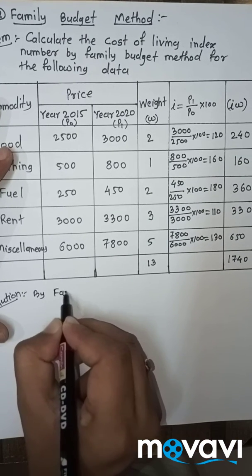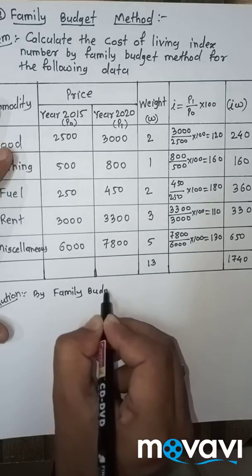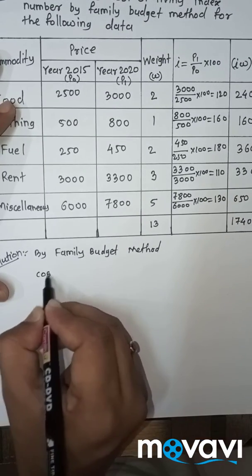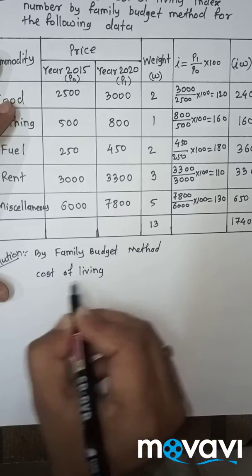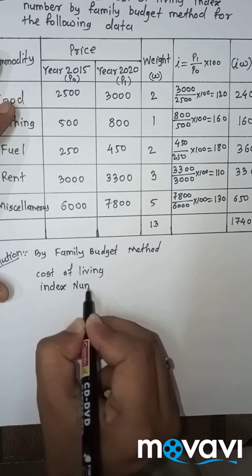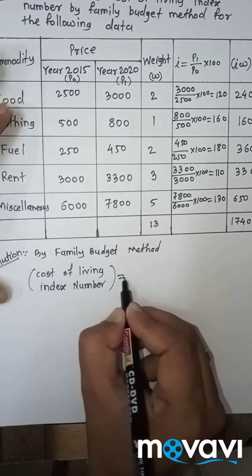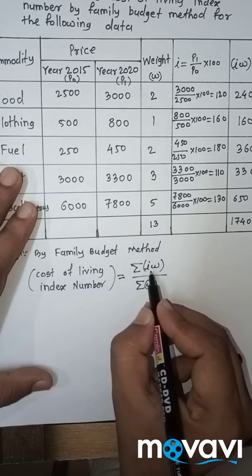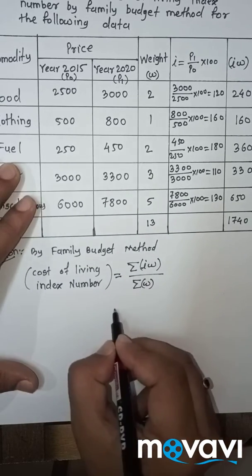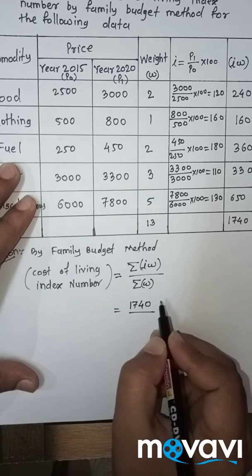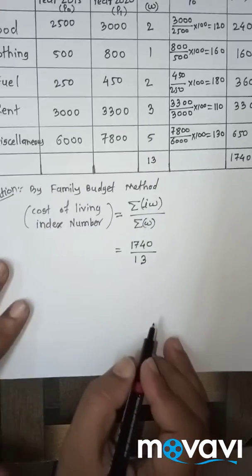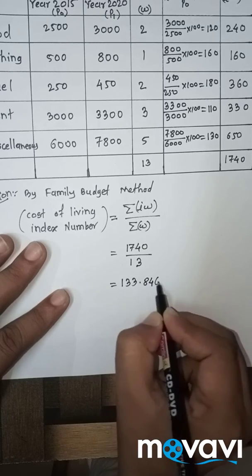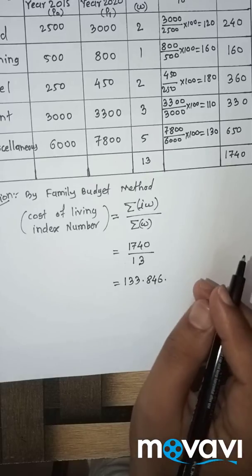By family budget method, cost of living index number is equal to summation IW upon summation W. Here summation I into W is 1740, and summation W is 13. If we calculate we get 133.846. This is the value of cost of living index number by family budget method.